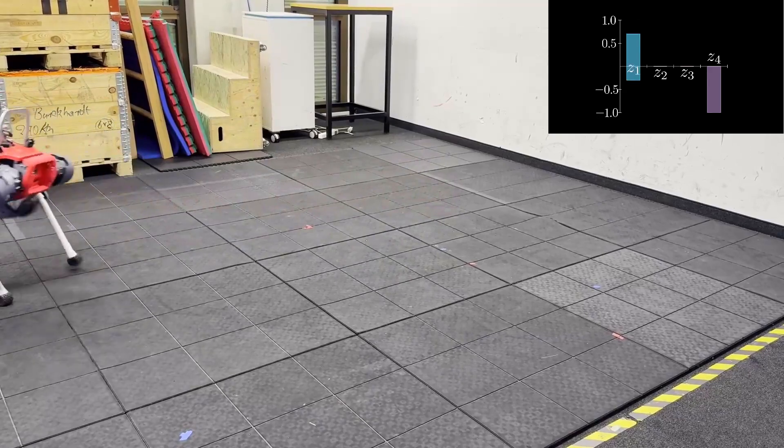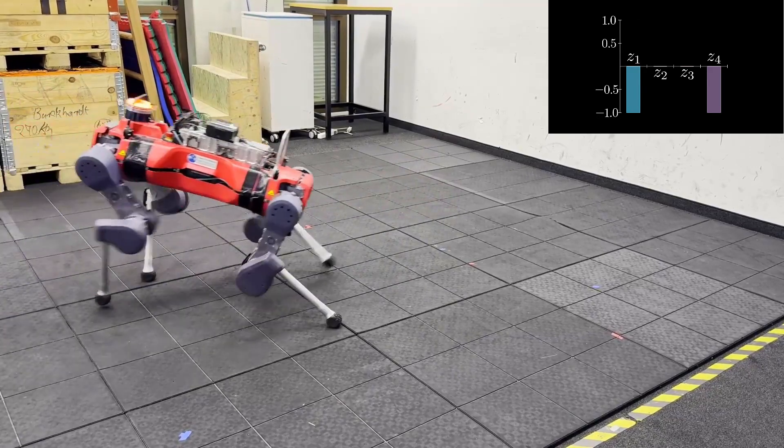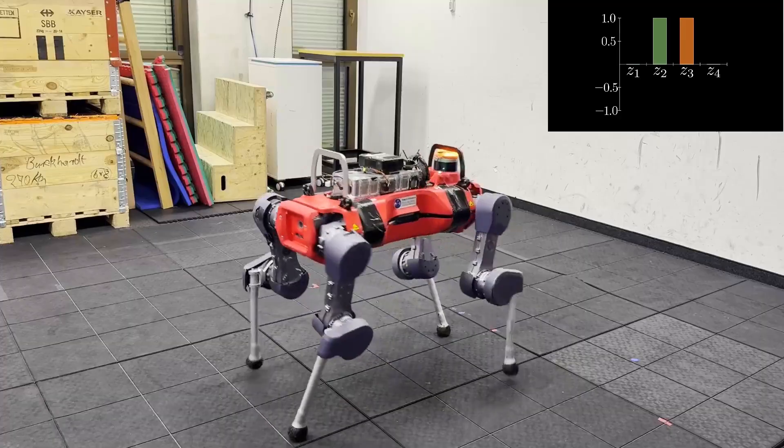For example, we can command the robot to walk while pitched, or to rotate while crouched.